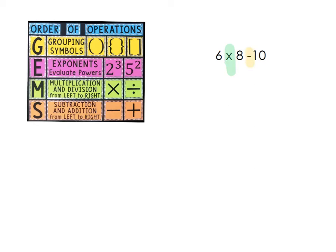I'm going to use my GEMS poster to figure out which to do first. So I don't see any grouping symbols. I don't see any exponents, so I don't have to worry about that one. I do see a multiplication problem and I do see a subtraction problem. So I know that the first thing I'm going to need to do is multiplication and the second is subtraction. And then I begin actually working through the problem.